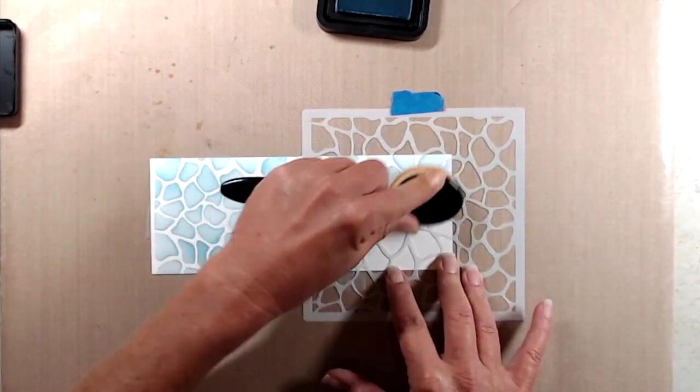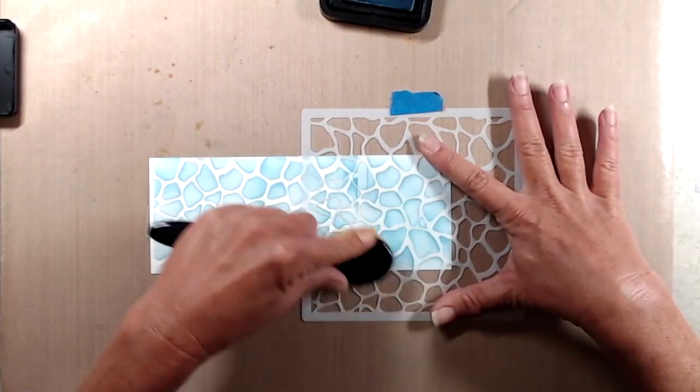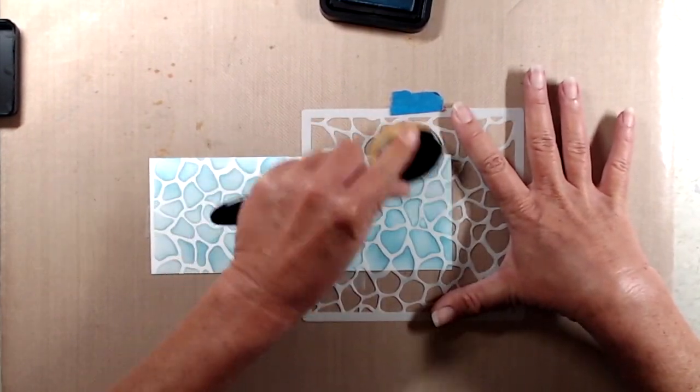Once I reached the end of the stencil, I picked it up and I moved it down to the other end of the card and finished up stenciling that first layer of ink.